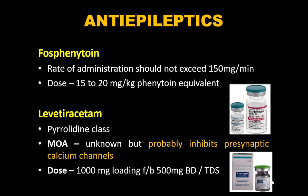When rapid loading is needed, fosphenytoin should be used — it can be administered as fast as 150 mg/minute. The dose is 15–20 mg/kg of phenytoin equivalent. Note that 1.5 mg of fosphenytoin equals 1 mg phenytoin equivalent.